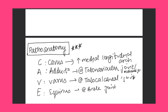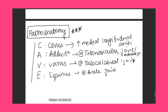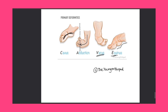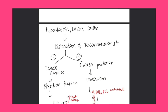Now coming to pathoanatomy, which is very important. Using the mnemonic CAVE: Cavus — increase in the medial longitudinal arch, which is exaggerated. Adduction — movement towards the midline of the body, occurring at the talonavicular joint or mid-tarsal joint. Varus occurs at the talocalcaneal joint or subtalar joint. Equinus occurs at the ankle joint, also known as the tibiotalar joint.